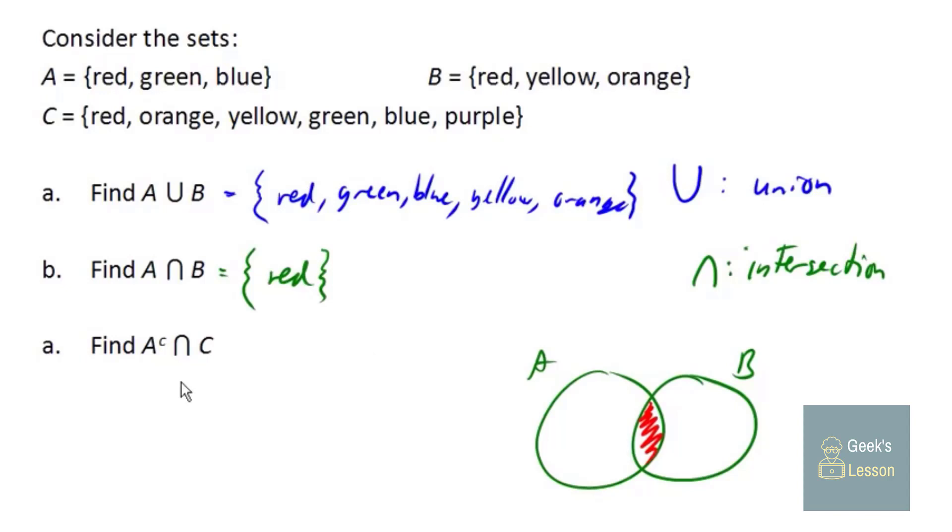Now for the third one here, we need to talk about this symbol. When we write A with the little c here, the little c means complement, which is another way of sort of saying the opposite of, or everything else. So A complement means everything that's not in A.